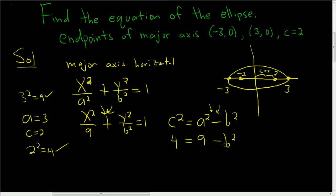Minus b squared. Subtract the 9, so you get negative 5 equals minus b squared. That means that b squared is equal to 5.